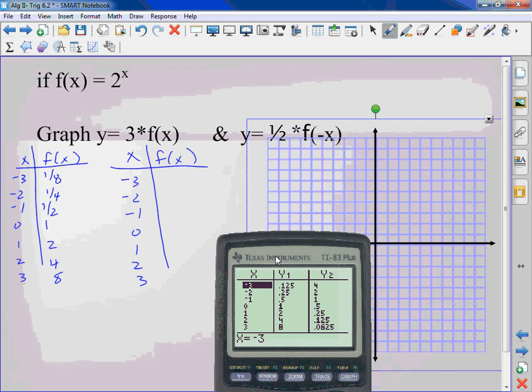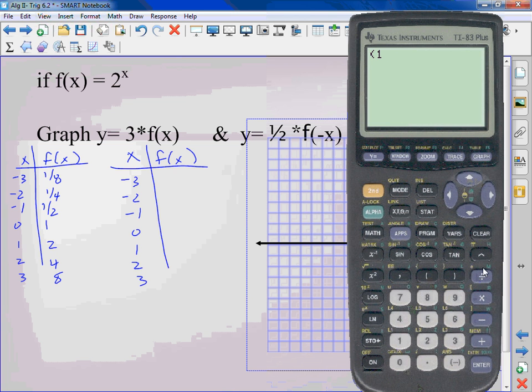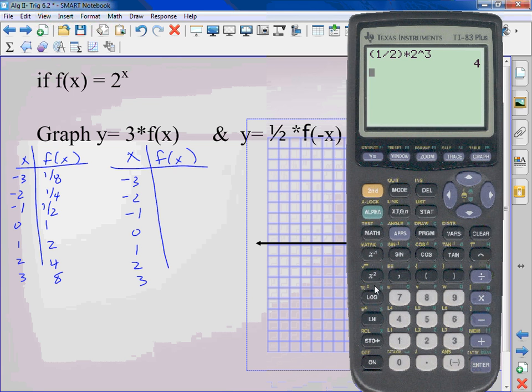What this means is I am taking 1 half times f to the negative x. So instead of using negative 3, I now use positive 3. So 2 to the third, which gives me 4. Right. I'm using this because that's my f of x. So this is f of negative x. So instead of using negative 3, I now use positive 3. Because we've used the negative right here.